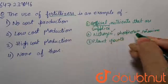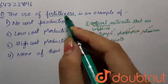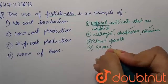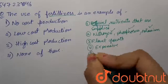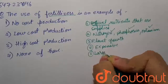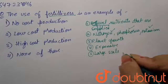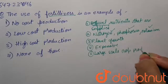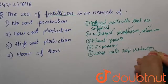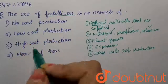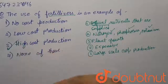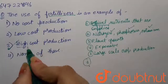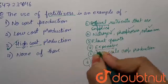Fertilizers are used on a high scale, so they are expensive. Since they are so specific, they are expensive as well, and they are used in large-scale farming. So clearly they represent high-cost production. Therefore, option 3 is correct: high-cost production.